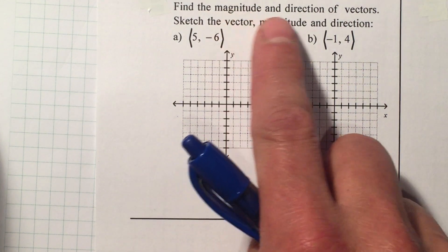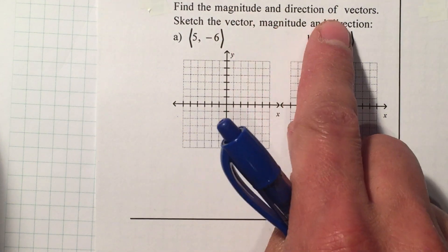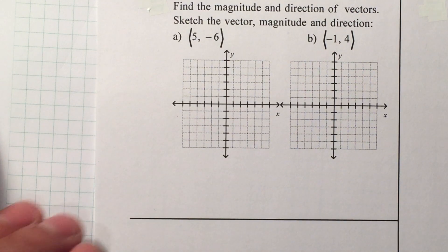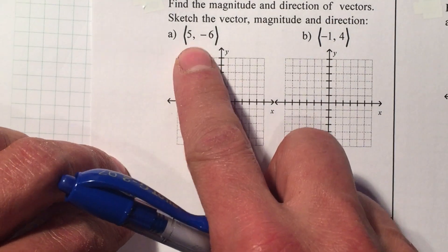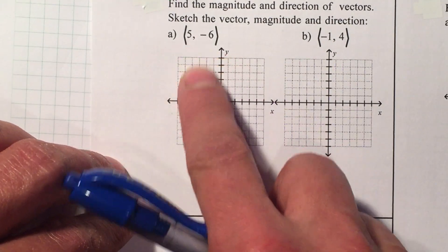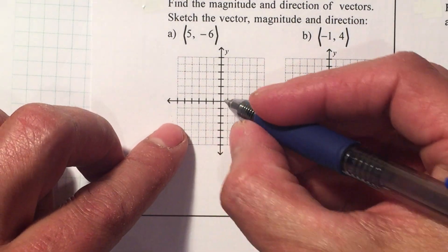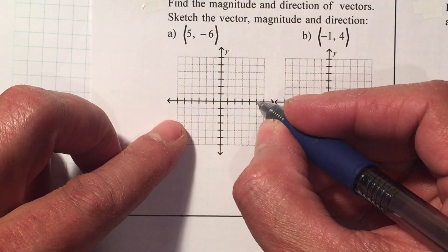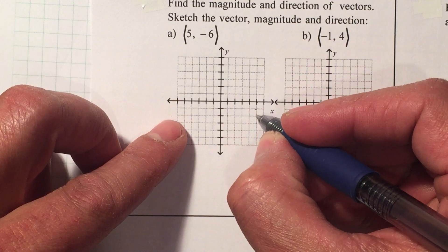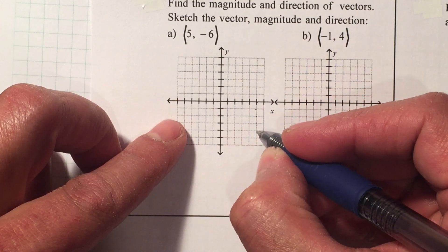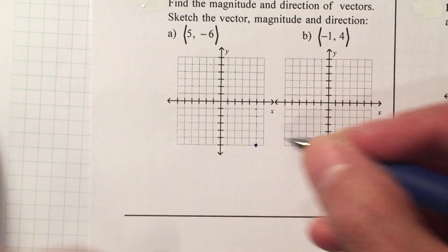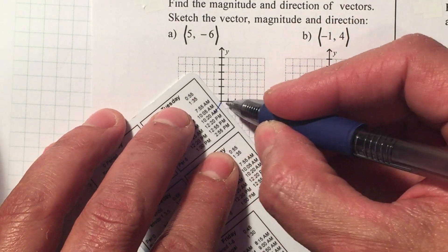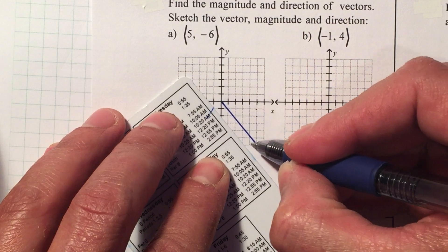Find the magnitude and the direction of the vectors. I'm giving you a graph because I need you to graph it. So first my vectors: 1, 2, 3, 4, 5 and negative 6, 1, 2, 3, 4, 5, 6 — and this is my vector.